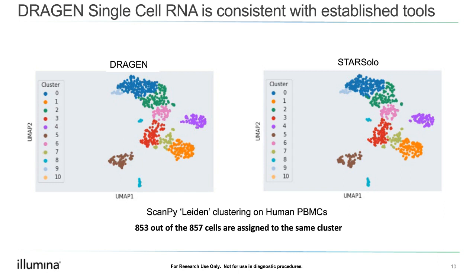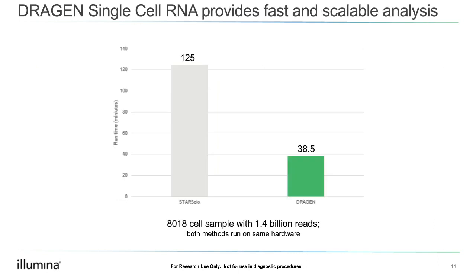Here is a speed comparison with StarSolo. We took a sample with about 8,000 cells and about 1.4 billion reads, run on the same hardware — a 24-core machine — except Dragon additionally uses the FPGA accelerator. Dragon is about three to four times faster than running StarSolo.